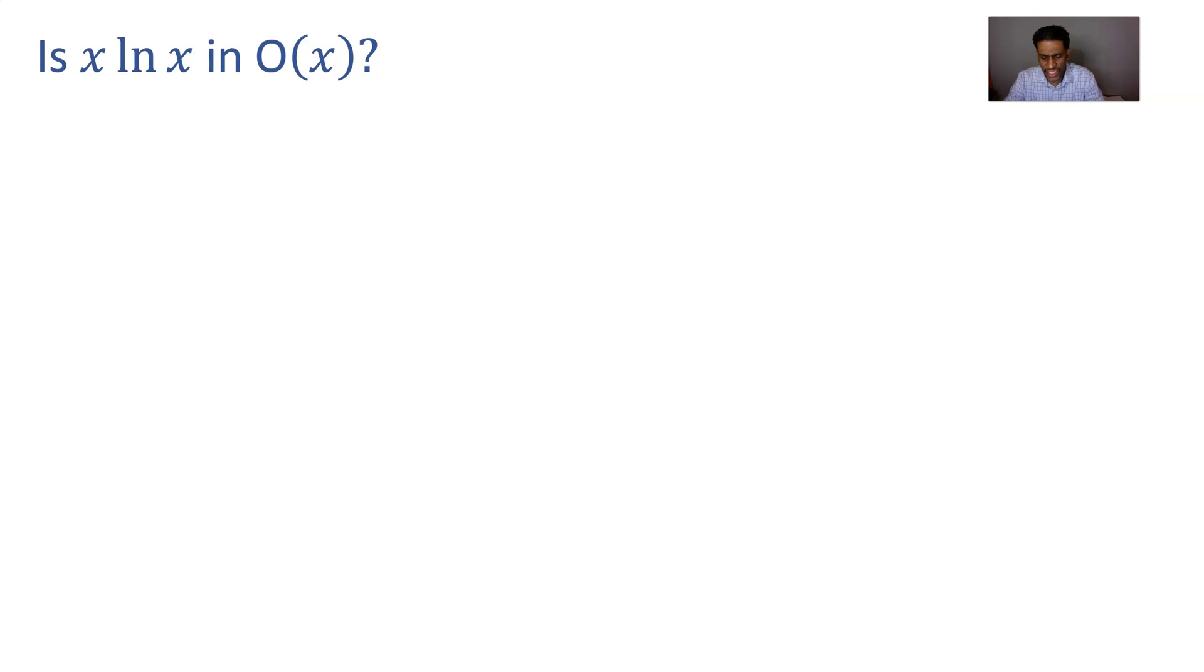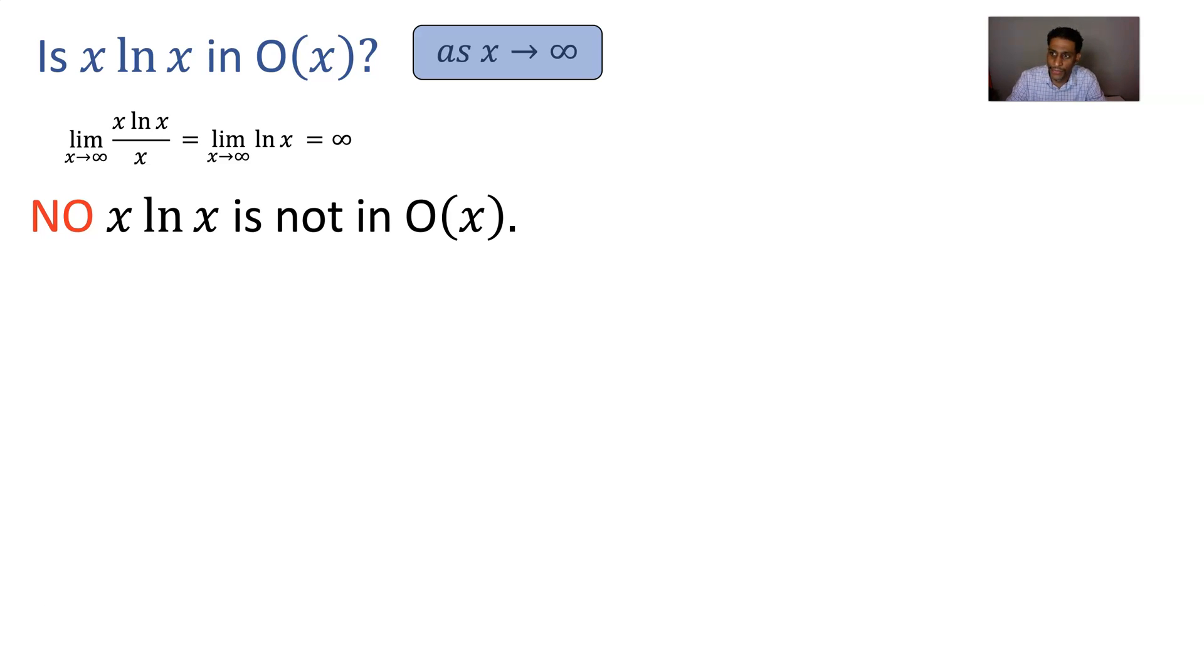How about x log x? Is it in big O of x? Consider the function, we're talking about as x goes to infinity. Consider the function f as x log x divided by g, who is x, and see what happens as x goes to infinity. The x is canceled out immediately and this guy goes to infinity. It's not a constant, a finite constant. So no, x log x is not in big O of x. x log x grows faster than x, so it can't be.